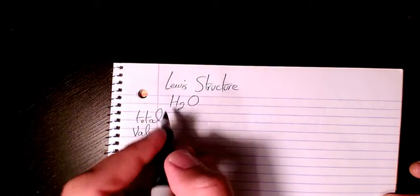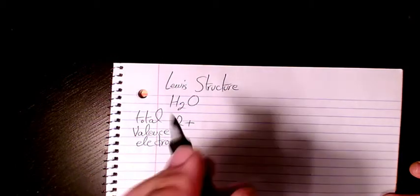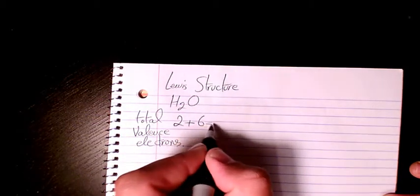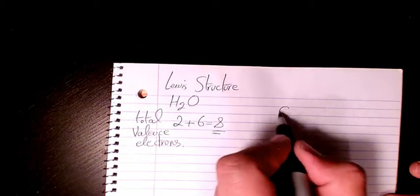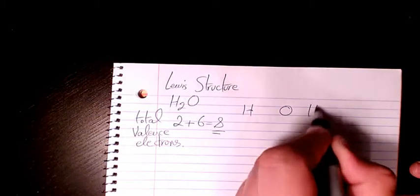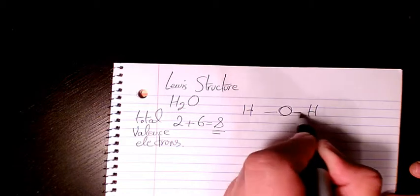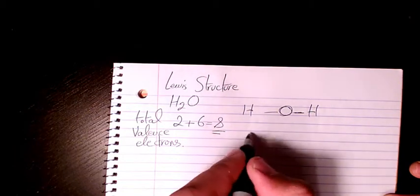So we have two hydrogen, two times one, plus oxygen, six, so it's going to be eight total number of electrons. Then I'm going to have O, one and one here, so two bonds. Two times two, four.